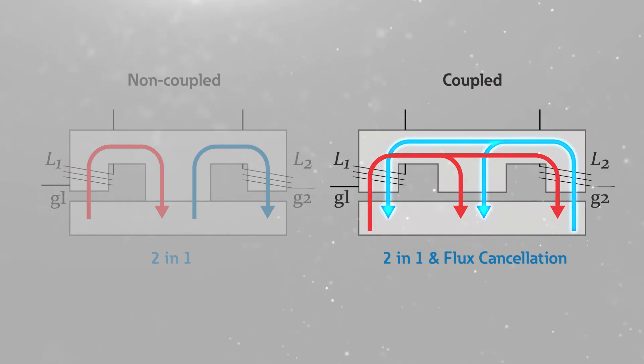Coupled inductors are physically and electrically integrated, providing AC flux cancellation between the inductors, reducing ripple current, and improving transient response. Coupled inductors achieve an even higher current rating in the same package size, enabling additional space saving and higher power density.